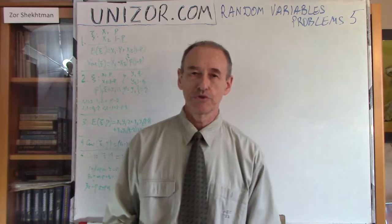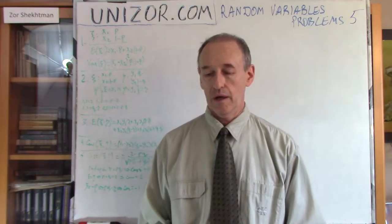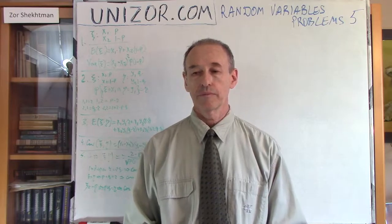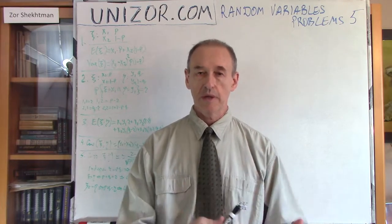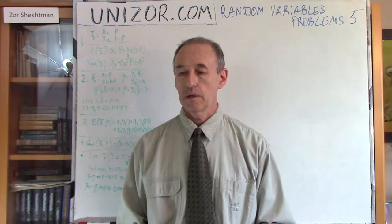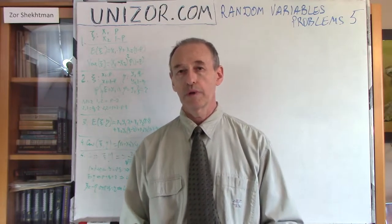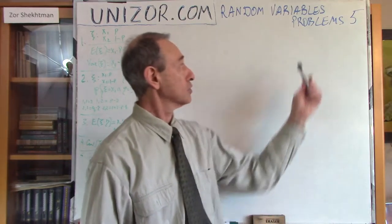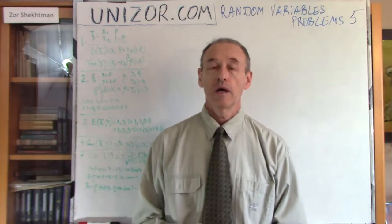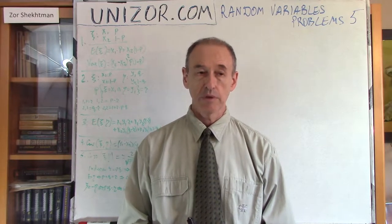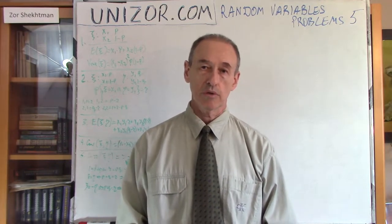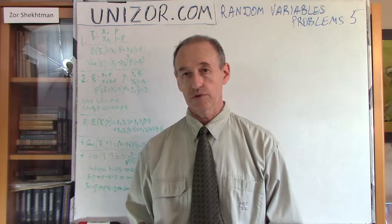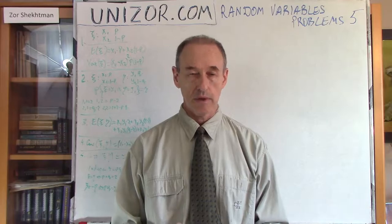Hi, I'm Zor. Welcome to Unisor Education. We will talk about correlation between two random variables and make some calculations based on certain knowledge about these random variables. In the previous lecture, called Problems Number Four, I introduced these two random variables and did some preliminary calculations. Now we will go into the covariance and correlation for these random variables.